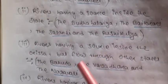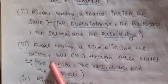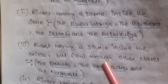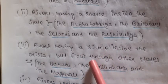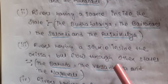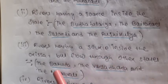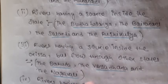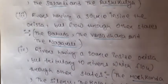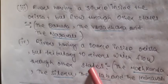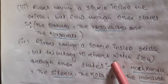The third group is rivers having a source inside Odisha but flowing through another state — meaning the origin is in Odisha but their flow goes outside Odisha. These rivers are Bahuda, Bangsodara, and Nagabani.